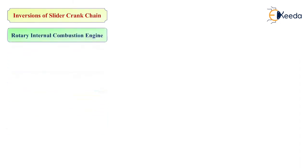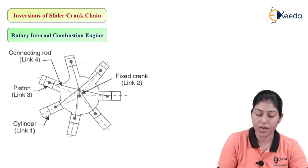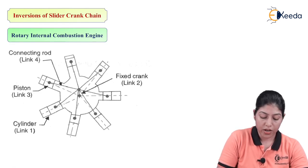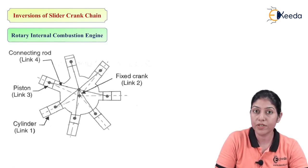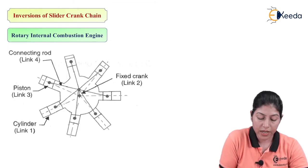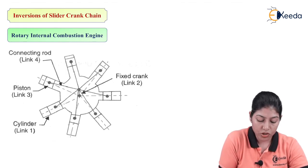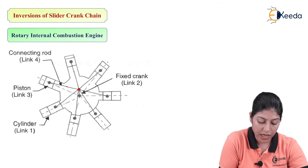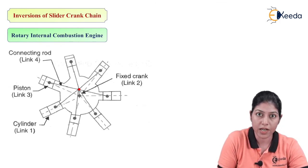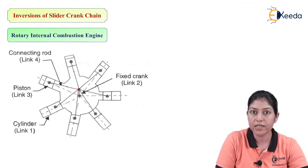The next type of inversion is the rotary internal combustion engine, which was previously used in aviation. In this engine, a number of cylinders are connected with a number of connecting rods to one single crank. Only one crank is used here. The rotation of the crank provides motion to different connecting rods, each connected at one point with the single crank, and each connecting rod is further connected with a piston. This engine acts like a wheel.